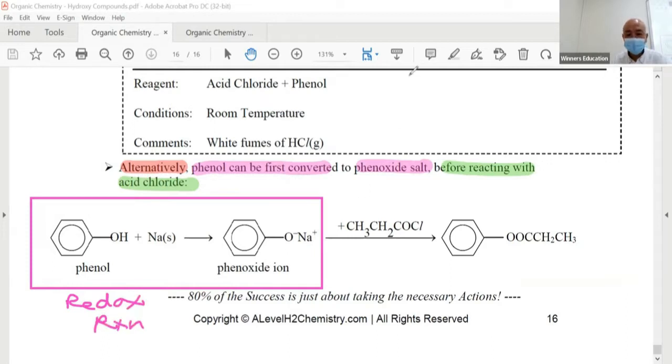What they want is the phenoxide ion there. And after which, they then add in the acid chloride. This is known as nucleophilic substitution.